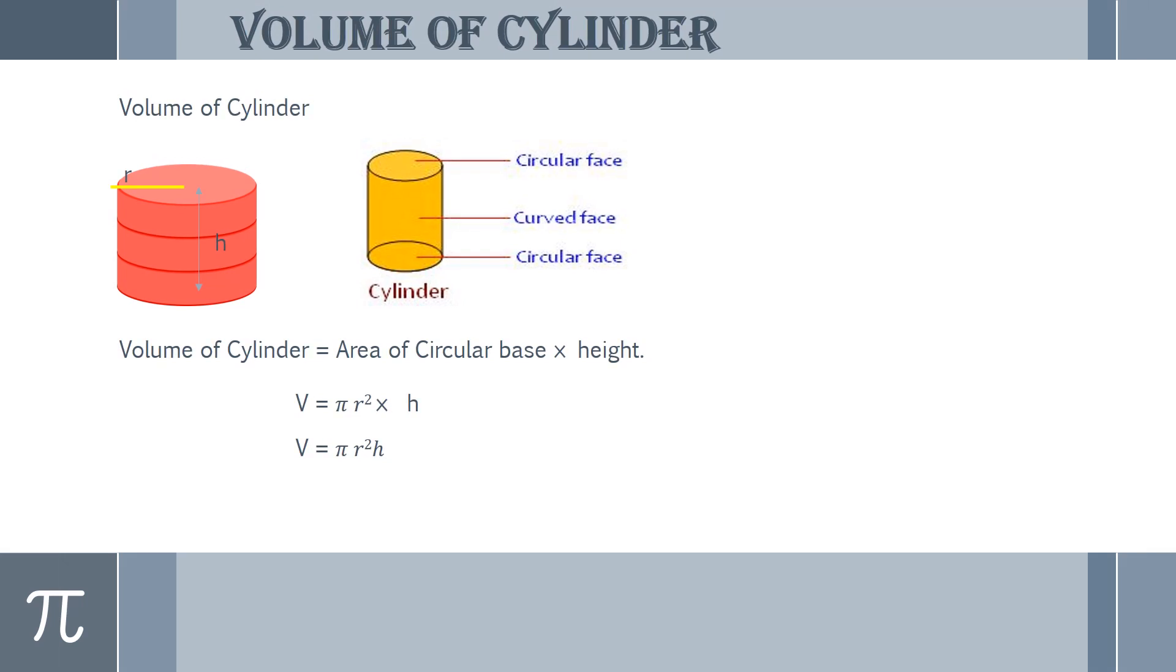The right circular cylinder can be built by using circles of the same size. A cylinder has three faces, two circular faces and one curved face. And the volume of the cylinder can be found by multiplying the area of the circular base and the height, which is pi r square h.